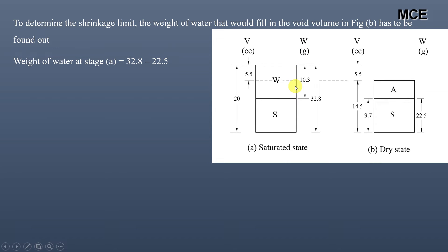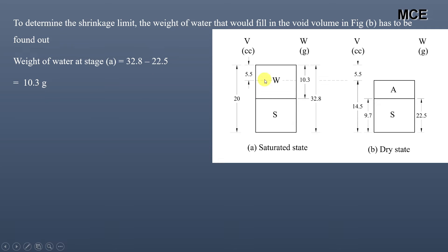First, we find the weight of water at stage A — that is, how much water the soil initially had. Weight of water at stage A = total weight of saturated soil (32.8) minus weight of dried soil (22.5), which gives 10.3 grams. This 10.3 grams is the weight of water in stage A, as shown on the diagram.